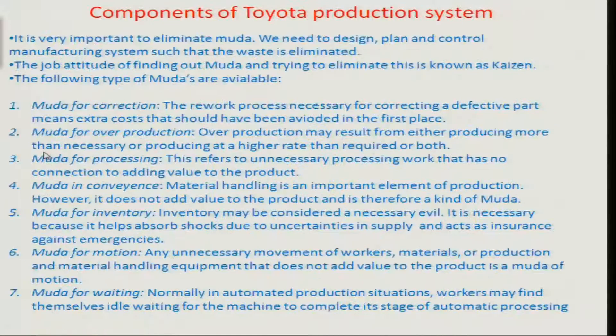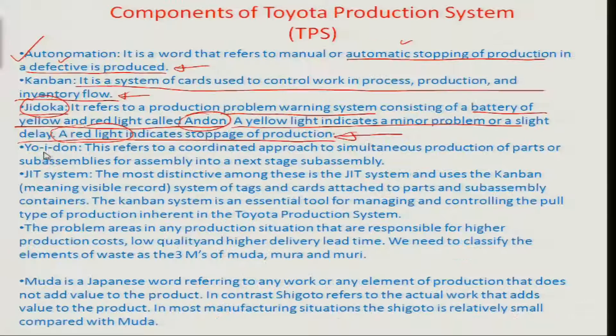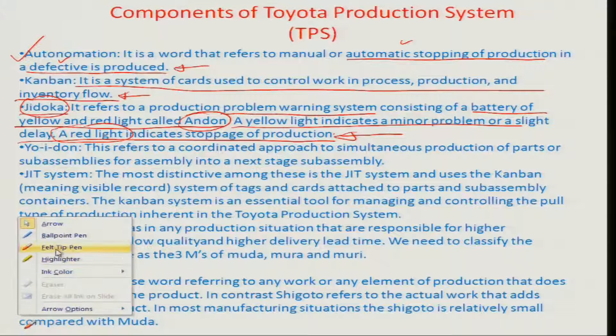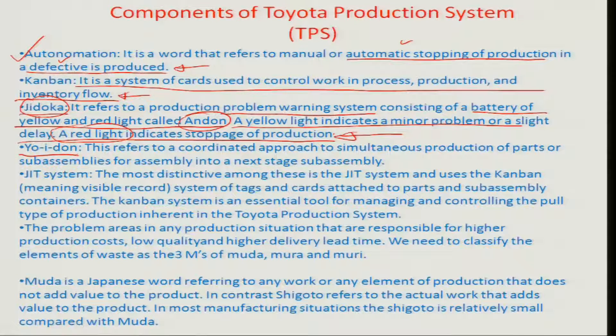There are many other components which are important for describing the Toyota Production System. One of them is called the Yodon, which refers to the coordinated movement of sub-assemblies. In a lean-managed production system, the whole product can be modularly designed, with dedicated sections supplying modules that come into the main assembly and get fitted in a modular manner.